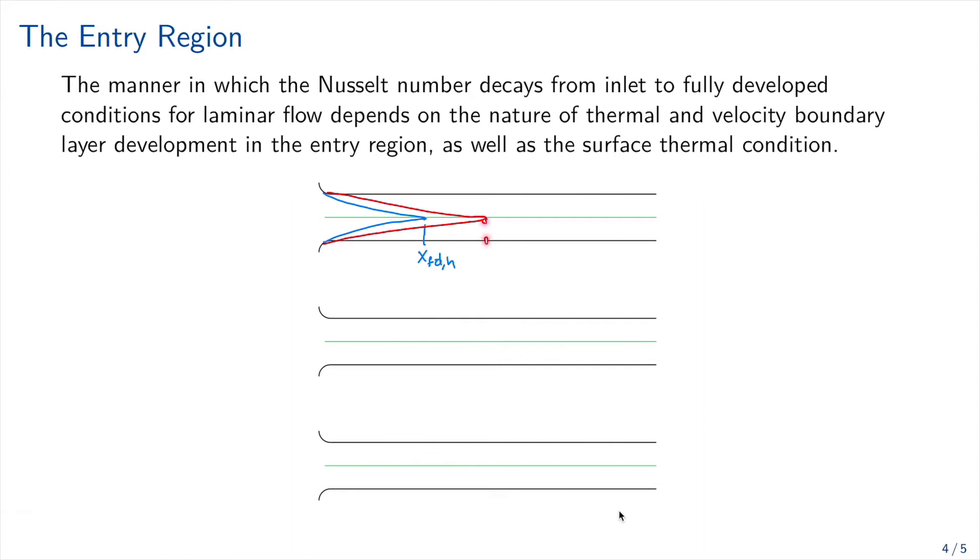The fluid to be fully developed in order for the thermal to be fully developed. So in general, it will be after the velocity is fully developed. And so at this point, we are going to have the x fully developed thermally. So this is the situation for Prandtls bigger than one, like oils.